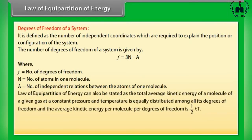The Law of Equipartition of Energy can also be stated as: the total average kinetic energy of a molecule of a given gas at constant pressure and temperature is equally distributed among all its degrees of freedom, and the average kinetic energy per molecule per degree of freedom is (1/2)kT, where T is the temperature of the gas.